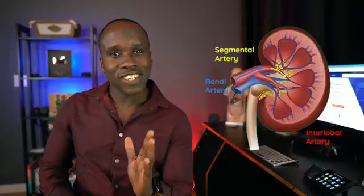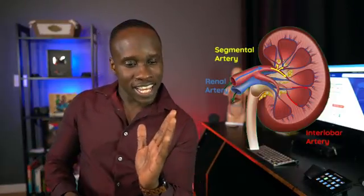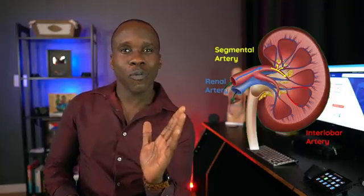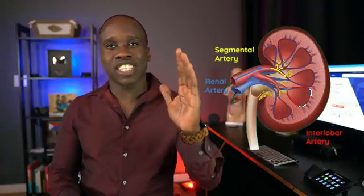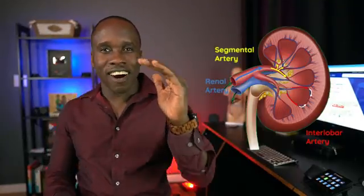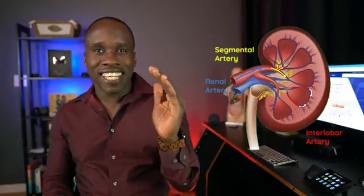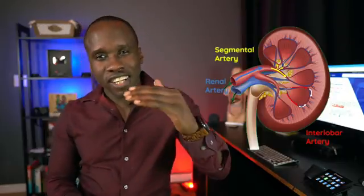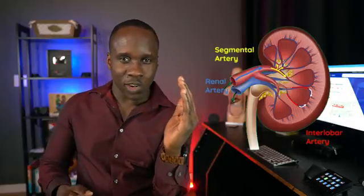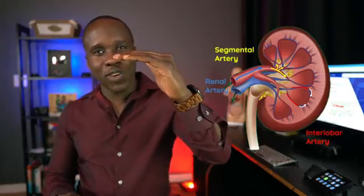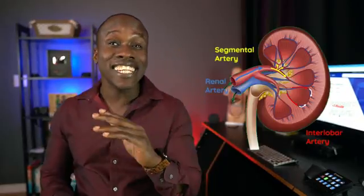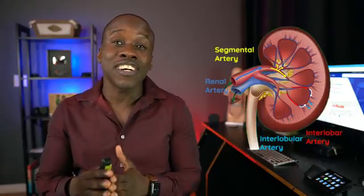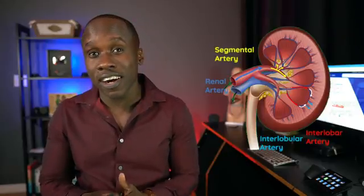As those interlobar arteries are going in between the pyramids, you'll see they reach a point where they kind of arch. Where it arches, that is when it becomes the arcuate arteries — arcuate referring to that arc. It's going around the pyramids, and then it sends off branches called interlobular arteries.